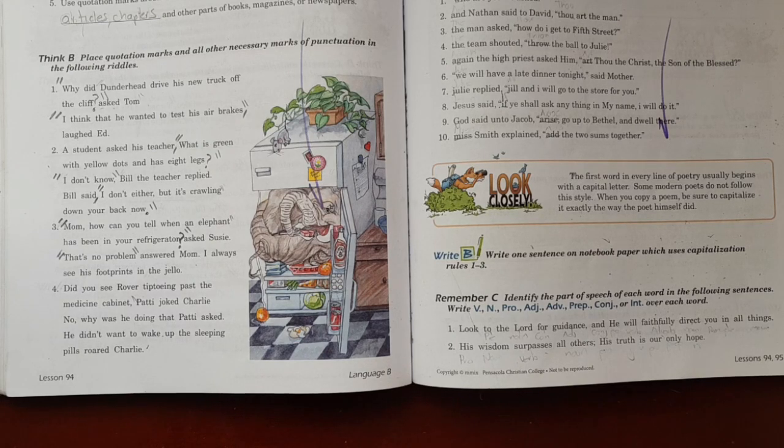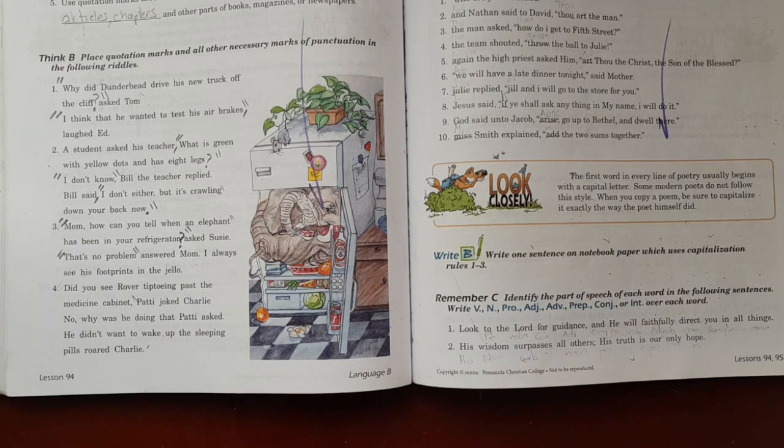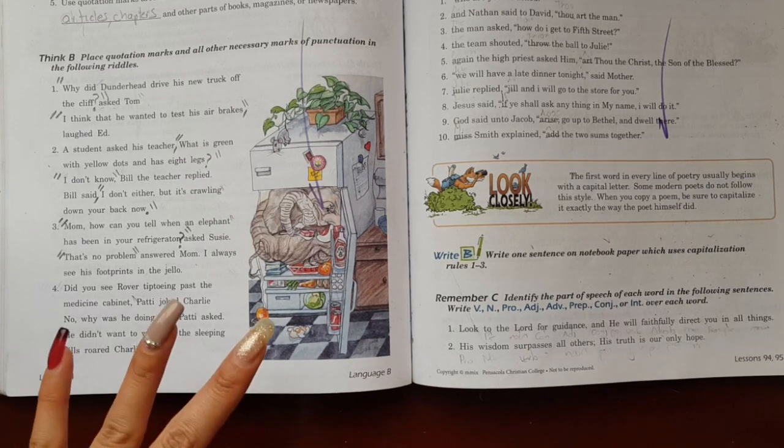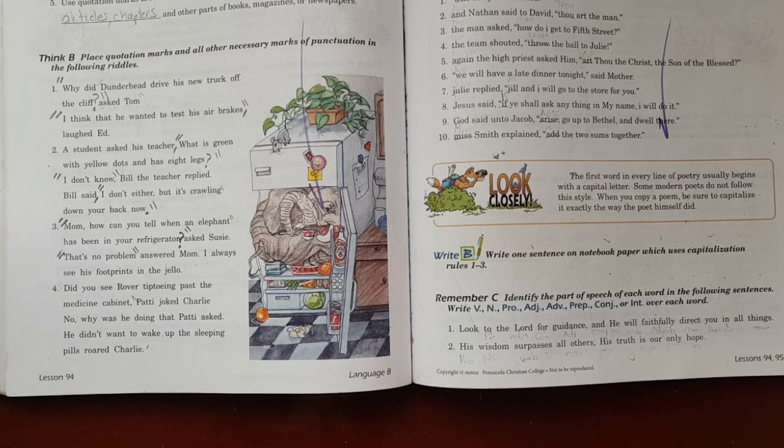That's no problem, answered Mom. I always see his footprints in the jello. Now here number four, you are going to do it. We are going to do number four. I'm going to help you. Did you see Robert tiptoeing past the medicine cabinet, Patty joked Charlie.